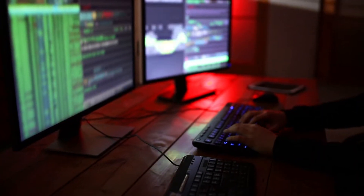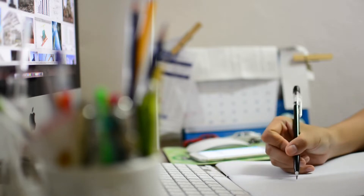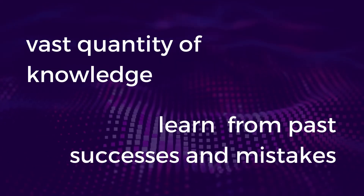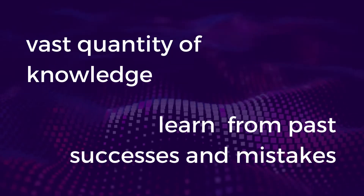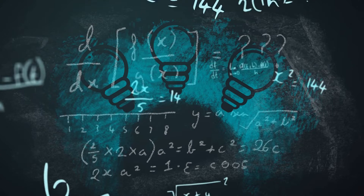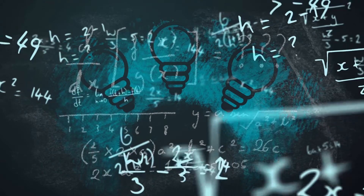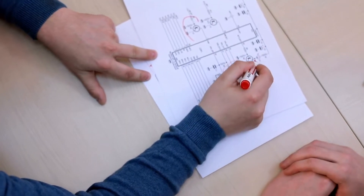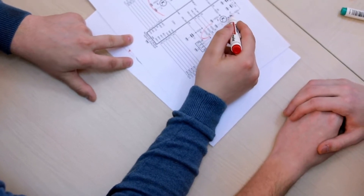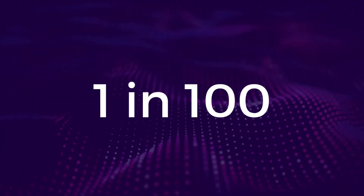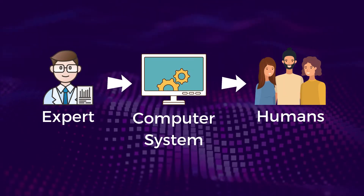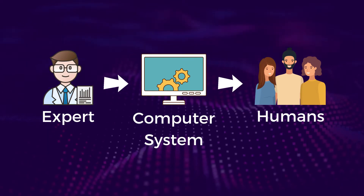Someone with a PhD in Computer Science might not be able to design a building as good as an architect. Expertise is usually associated with a vast quantity of knowledge, where experts often learn from past successes and mistakes. Human experts often recognise and formulate problems and proceed to solve them quickly and properly. They are also able to explain their solution, restructure knowledge, and determine relevance. Experts are one in a hundred, and having an expert system transfers expertise from an expert to a computer system and then to other humans.